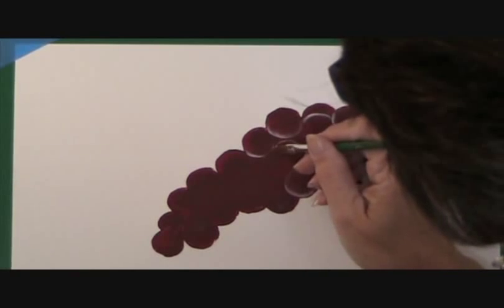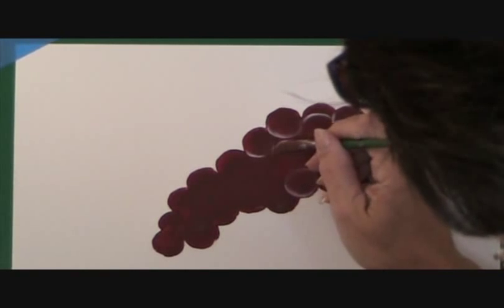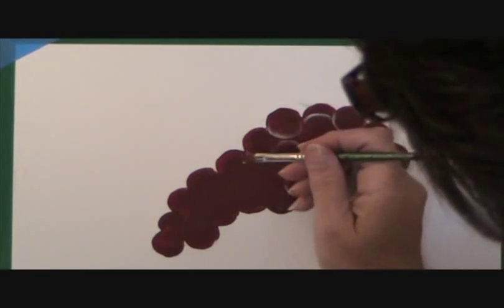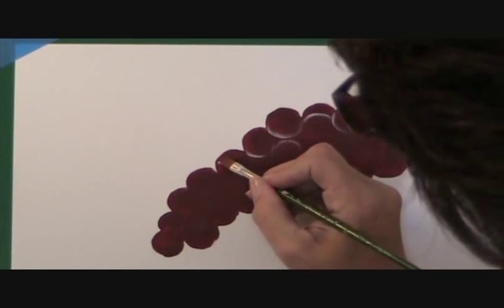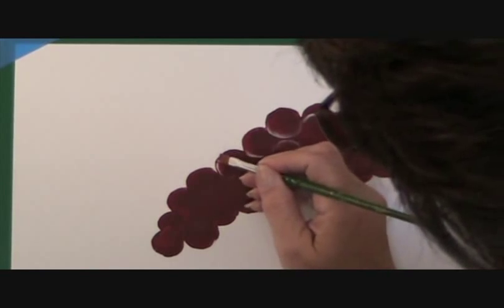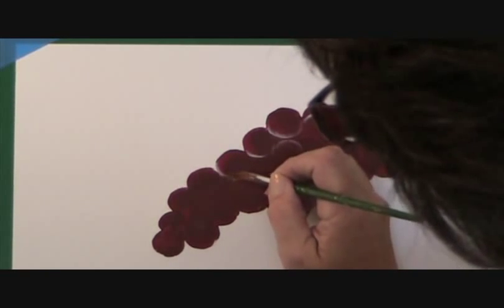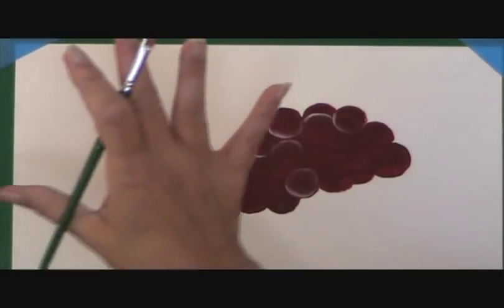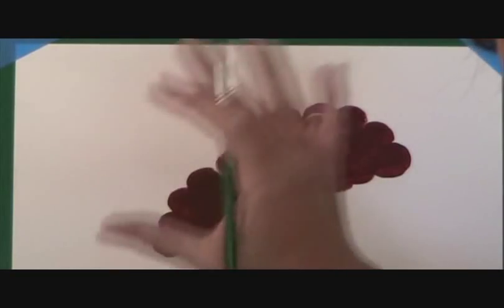And if you're not sure where they go, no worries. Just keep going. We can always cover it up with paint if you're not happy with the way it's looking. But just continue on highlighting your grapes. When you highlight, it brings things forward. When you shade, it pushes things away. So in a cluster of grapes, some come forward, some go back. And that's exactly what you want.